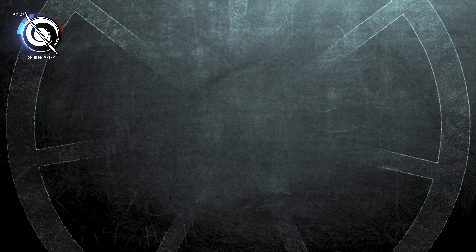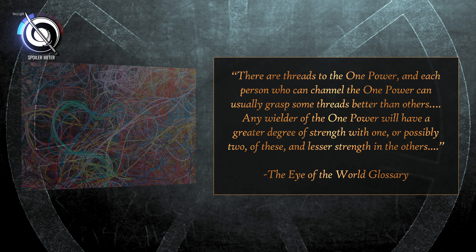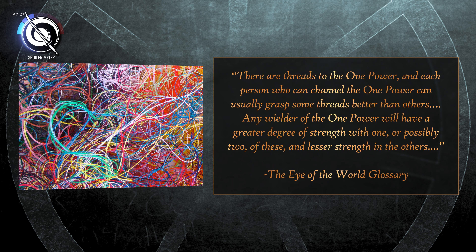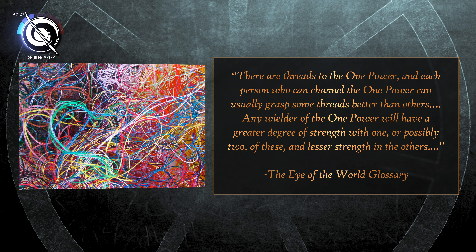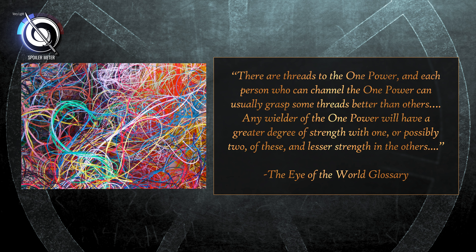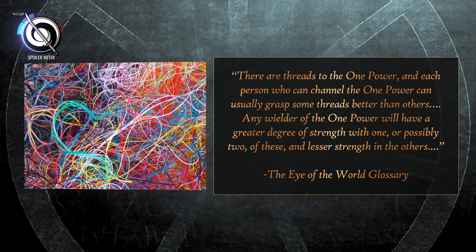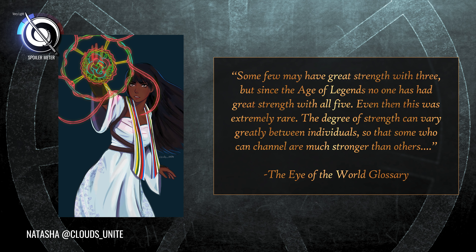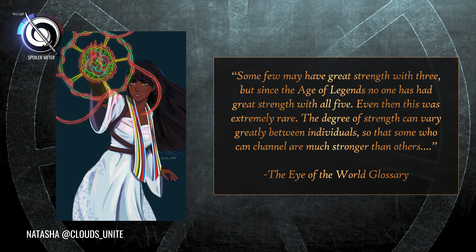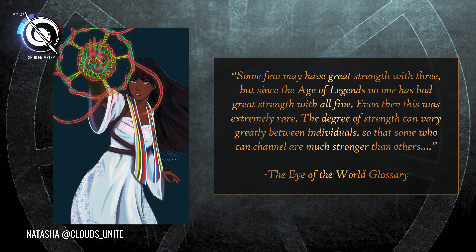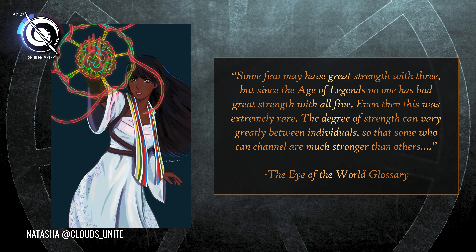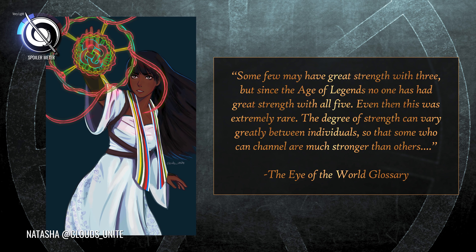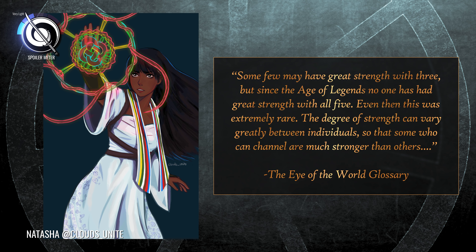The glossary says this about the Five Powers: There are threads to the One Power, and each person who can channel the One Power can usually grasp some threads better than others. Any wielder of the One Power will have a greater degree of strength with one or possibly two of these, and lesser strength in others. Some few may have great strength with three, but since the Age of Legends, no one has had great strength with all five — and even then, this was extremely rare. The degree of strength can vary greatly between individuals, so that some who can channel are much stronger than others.